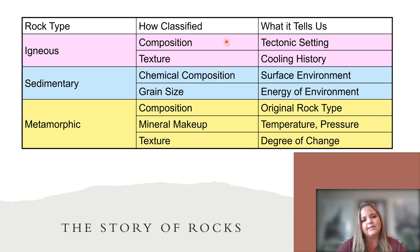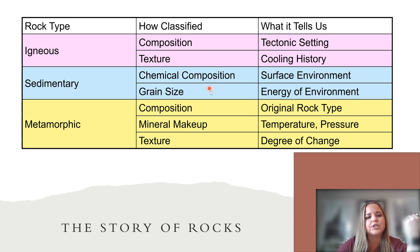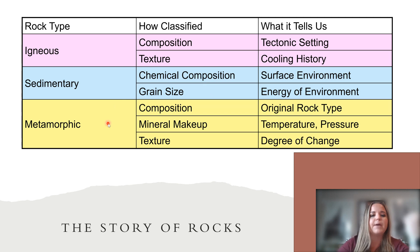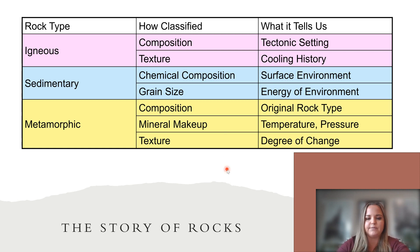We can classify these things by pretty similar methods. Igneous rocks are classified by composition and texture. Sedimentary rocks are classified by chemical composition and grain size. Metamorphic rocks are classified by composition, mineral makeup, and texture. I'm going to go through each of the rock types individually.